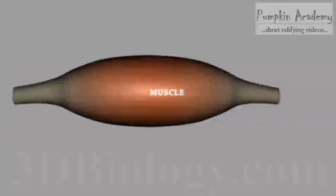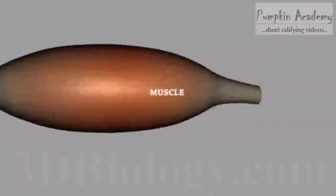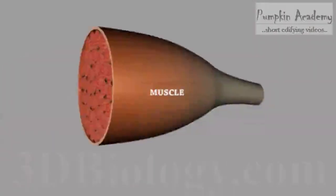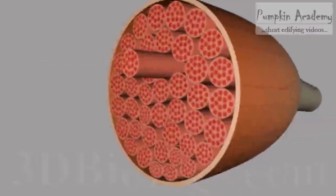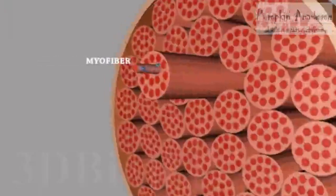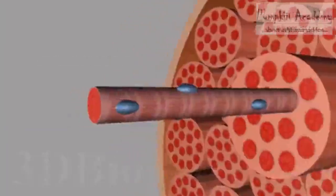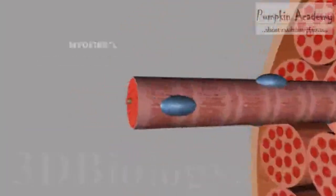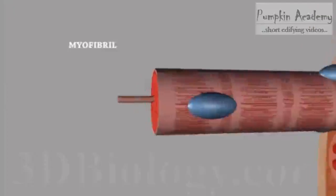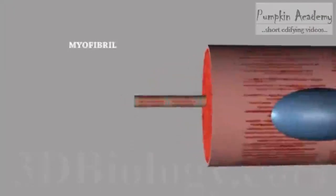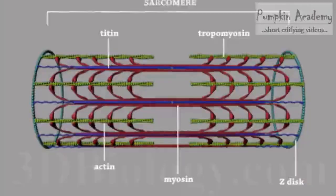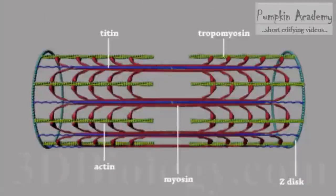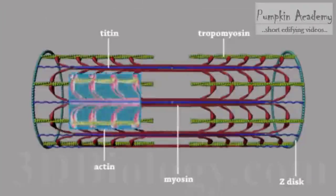In multicellular animals, muscle cells are the specialized cells designed for bringing their movement. The alternative contraction and relaxation of muscle cells produce various sorts of movements and locomotion in them.